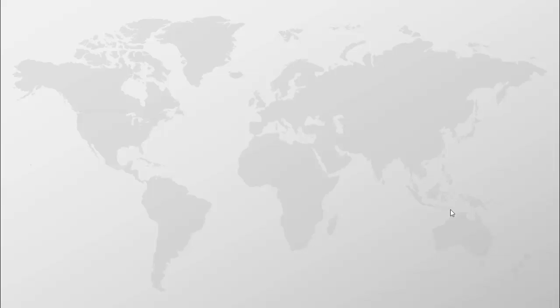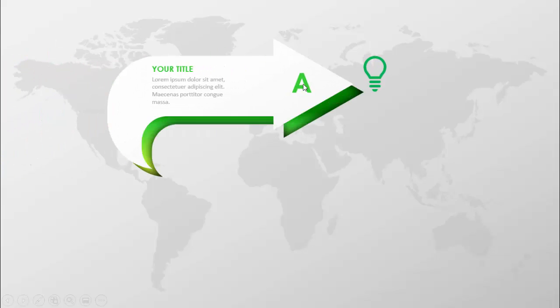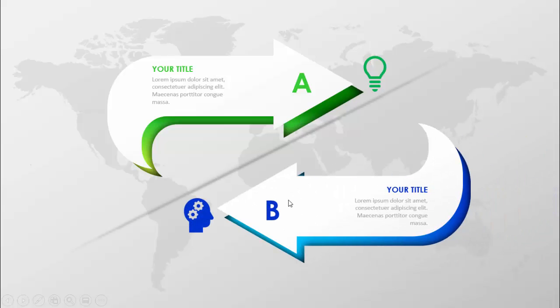In today's tutorial I'm going to show you how to create two arrow infographics slide in PowerPoint. The slide has a world map with a gray background. When I click, the first arrow comes with the option number, the title, the detail text, and an icon. On the next click, option B arrow comes with the same options — icon, title, detailed text — and then there's a separator line.